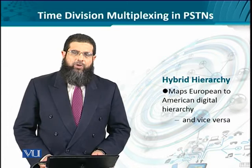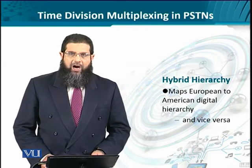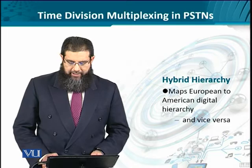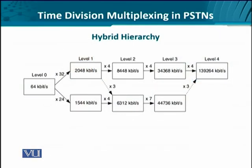In order to make the two hierarchies compatible and interoperable, a hybrid hierarchy was conceived that allows mapping from the European to the American hierarchy and vice versa. The hybrid hierarchy starts from level zero for both. At level one, the effective data rate for the European hierarchy is 2.048 megabits per second, and for the American hierarchy it is 1.544 megabits per second. Depending upon the multiplexing factor, the level two and level three data rates vary.